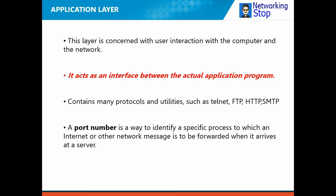Layer 7 is the application layer. It is the layer where the user interacts with network applications such as a browser and Microsoft Outlook. The browser uses the HTTP protocol, while Microsoft Outlook uses SMTP, POP, and IMAP — SMTP for sending emails, and POP and IMAP for receiving emails.